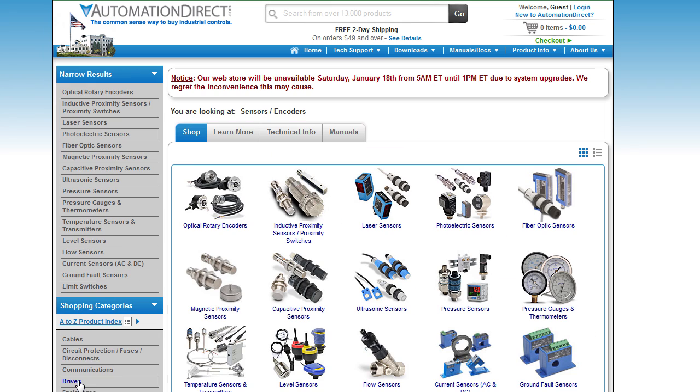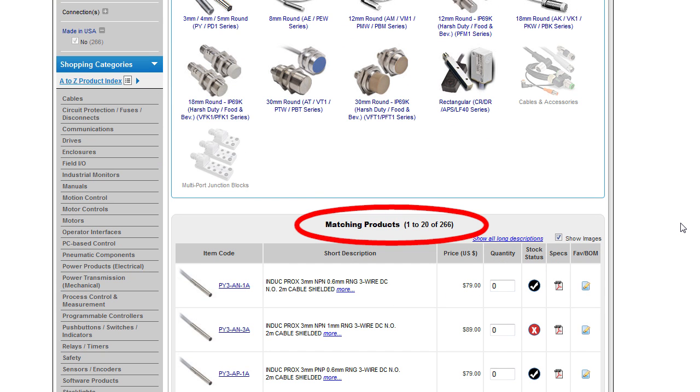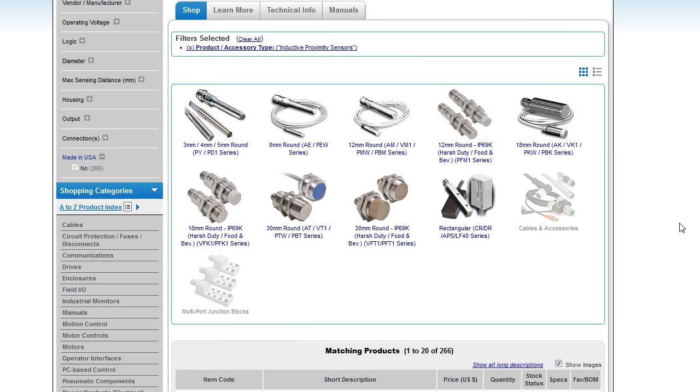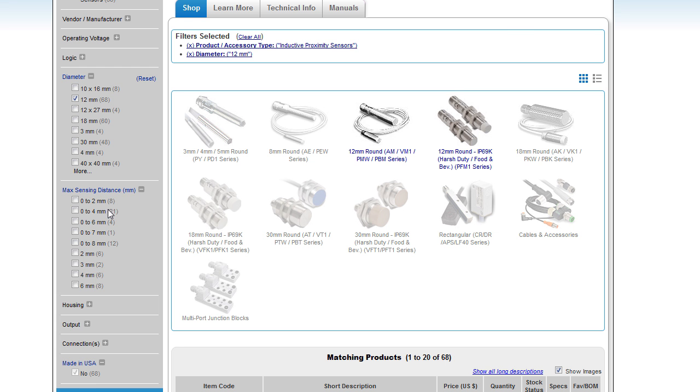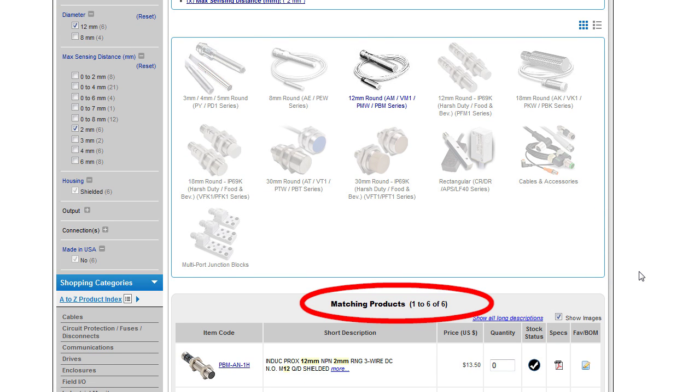For example, if I click on inductive proximity sensors because I want to detect something metal, I see there are 266 different kinds today, but if I narrow that by selecting a size and a sensing distance, I can quickly get that down to just 6 options. That parametric search is a huge time saver.